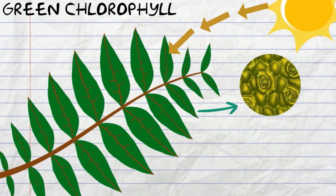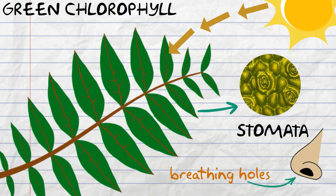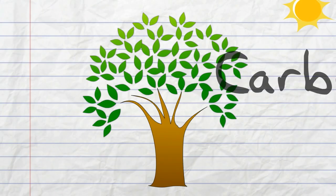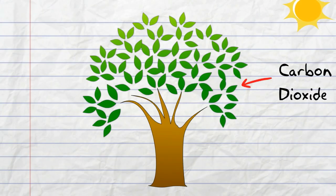There are tiny pores on the leaf called stomata which are like breathing holes for the plant. Carbon dioxide taken in by the stomata and water from the roots are used to make plant food using the light energy from the sun.